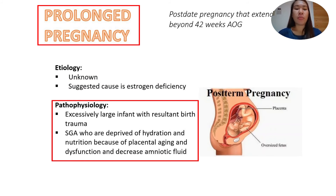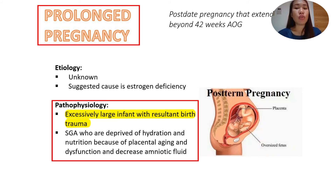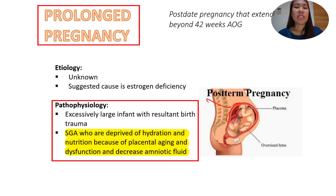What can we see in a post-term pregnancy? Sometimes we see an excessively large infant — macrosomic — with resultant birth trauma. Since the baby has been inside for 42 weeks, it has grown larger. We can also have fetuses that are small for gestational age, deprived of hydration and nutrition because of placental aging. Remember, the placenta also ages, and if the pregnancy reaches 42 weeks, placental aging occurs, meaning there may be insufficient nutrients delivered to the baby, resulting in a small-for-gestational-age infant.